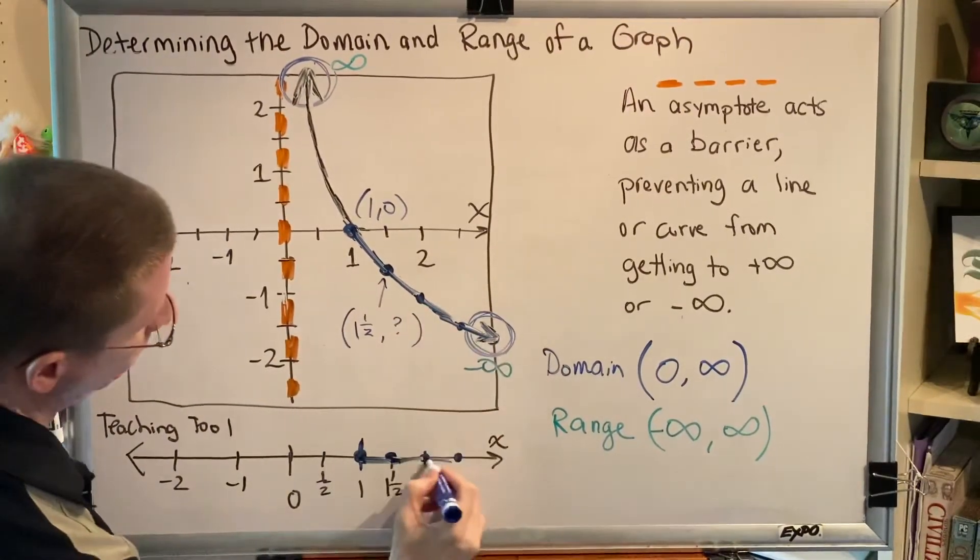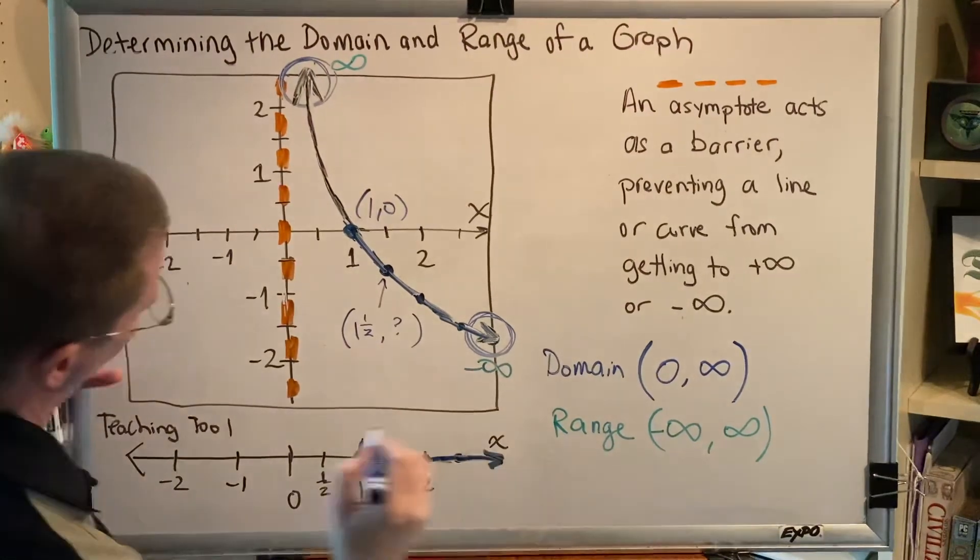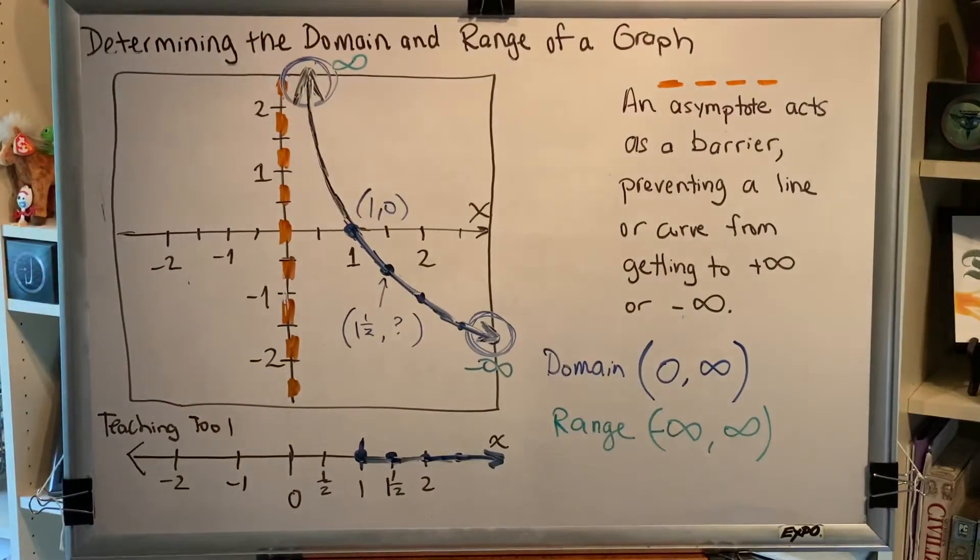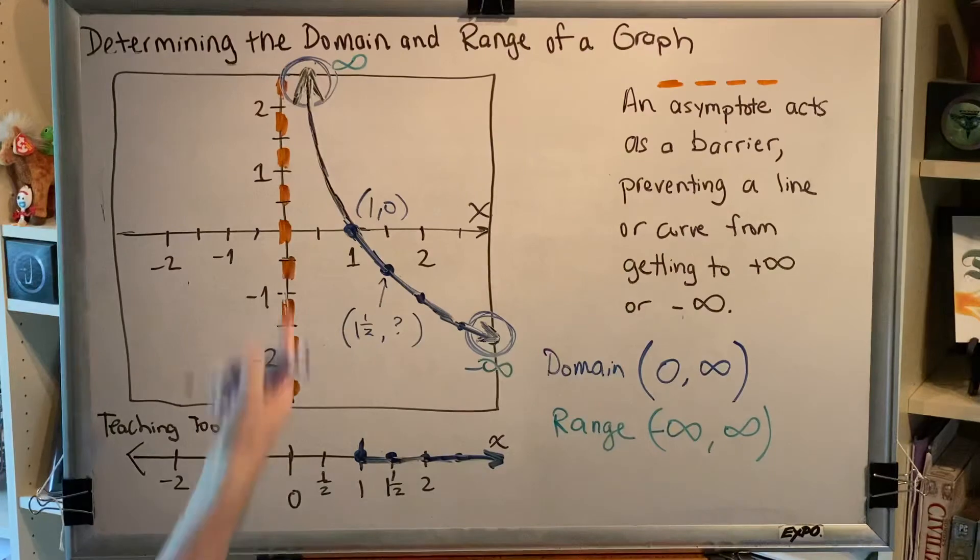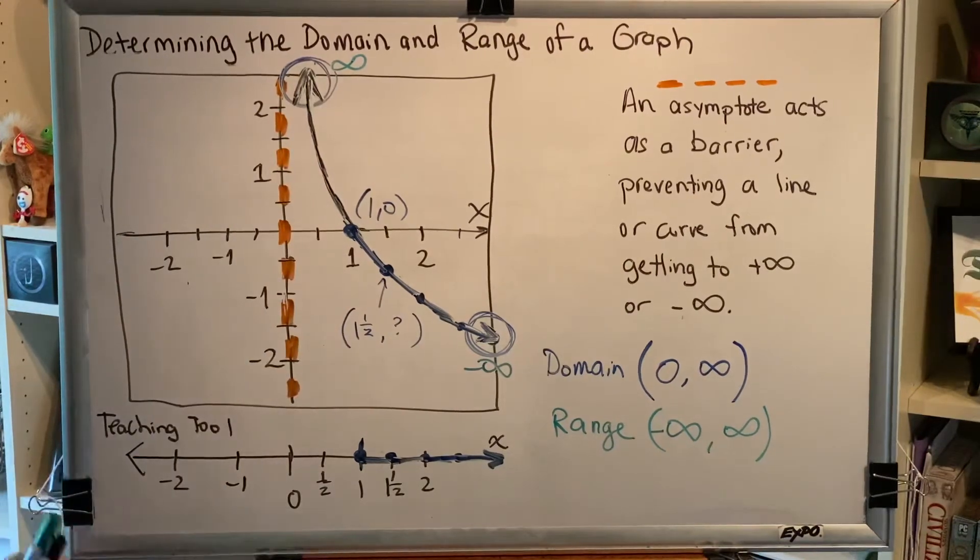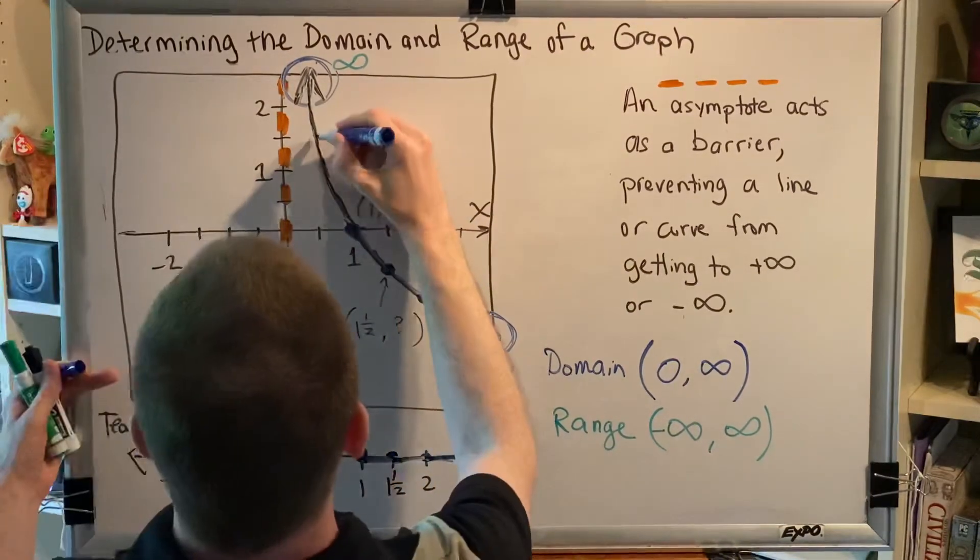And all the way to the arrow, which means all the way to the end. Now have I graphed my entire curve? No, I still have this part up here. We need to keep going.